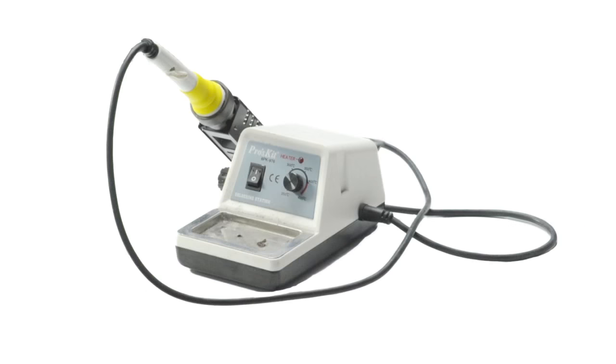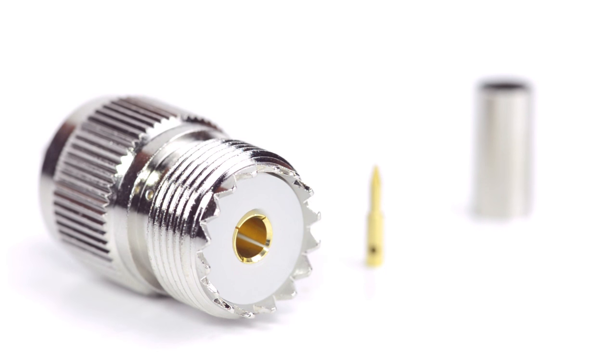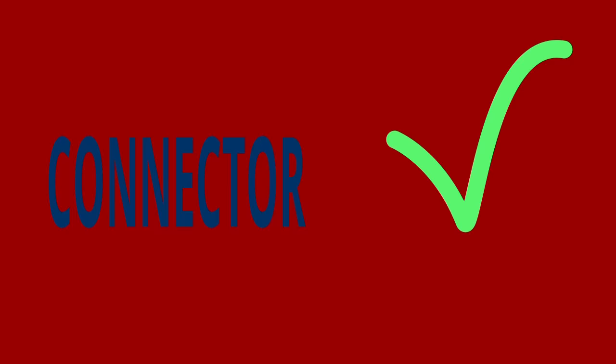For this installation you will need a coax stripper, coax cable, a soldering iron, a crimp tool, and the UHF connector. Keep in mind you will want to make sure that your coax stripper, crimp tool, and connector match the coax cable that you are installing.